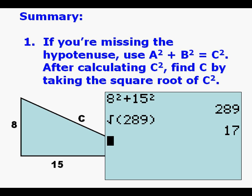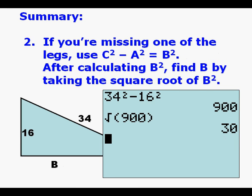Now to summarize, if you're missing the hypotenuse or a long side, use A squared plus B squared equals C squared. After calculating C squared, find C by taking the square root of C squared. But if you're missing one of the legs, use C squared minus A squared equals B squared. After calculating B squared, find B by taking the square root of B squared.